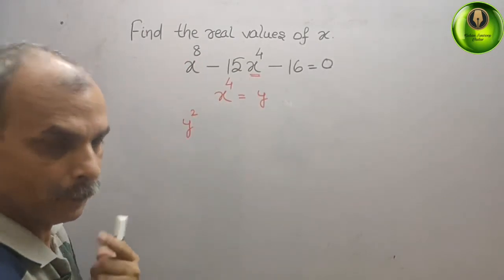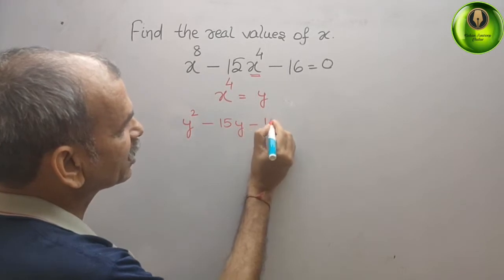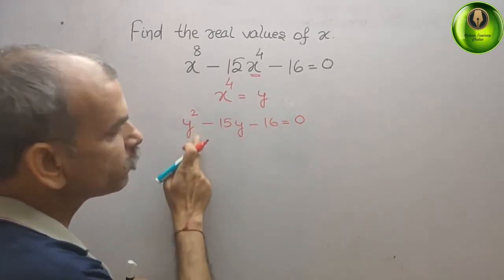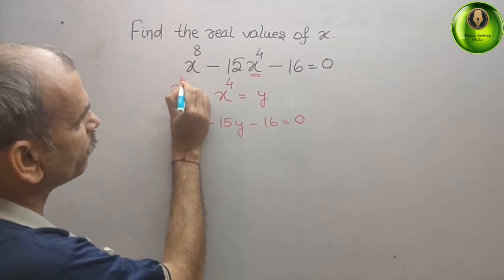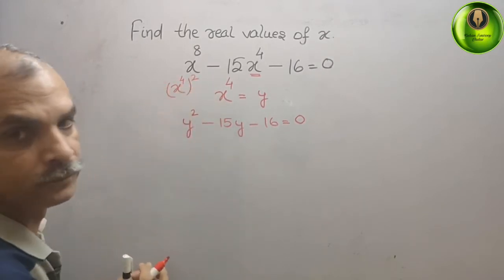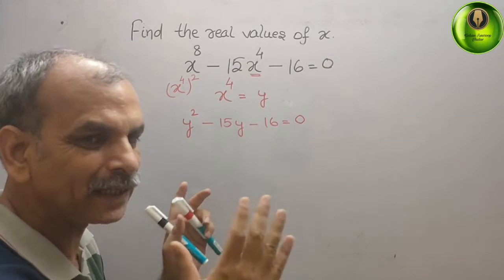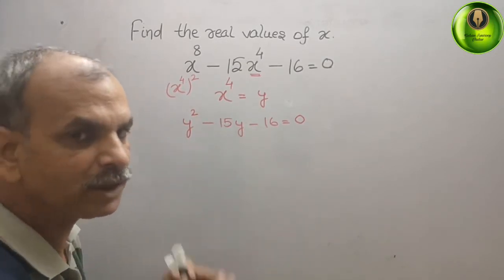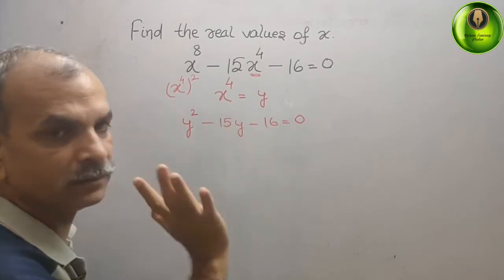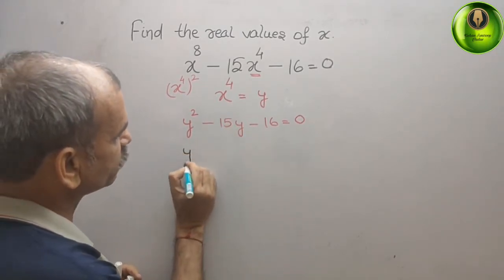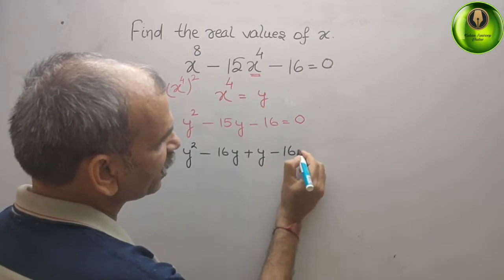y squared minus 15y minus 16 equals 0. How did we get y squared? We can write x to the power of 4, whole to the power of 2, which gives x to the power of 8. Now we will go for middle term splitting. We need factors that multiply to 16 and differ by 15: that is 16 and 1. So we write y squared minus 16y plus y minus 16 equals 0.